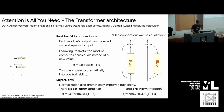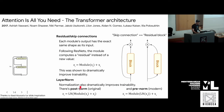Normalizations — layer norm or the increasingly popular RMS norm — make training much more stable by standardizing activations (subtracting mean, dividing by standard deviation, etc.). In transformers there are two main camps: post-norm and pre-norm, referring to where you place the layer norm relative to the attention and MLP blocks. There's no clear winner; which works better depends on other training choices like whether you use learning rate warm-up. Both work fine.